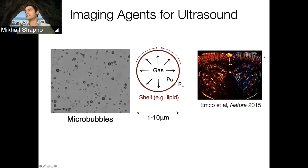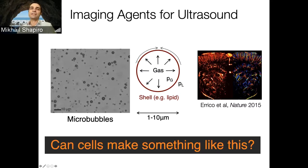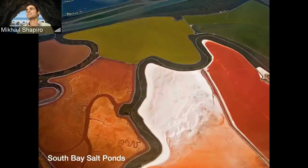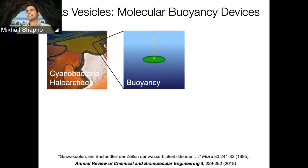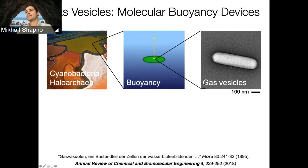Because microbubbles are filled with gas that has lower density and is more compressible than surrounding aqueous media, they're really good at scattering sound waves and can image blood vessels very nicely. But it's very hard to use these bubbles to image cells — they're the size of a cell and thermodynamically unstable. So the question we asked was: can cells make something like this themselves? In this regard, nature gave us a gift, found in photosynthetic microbes living in colorful bodies of water near San Francisco.